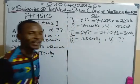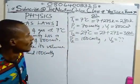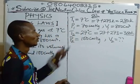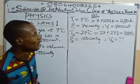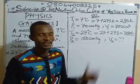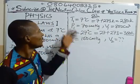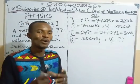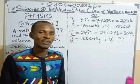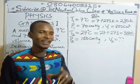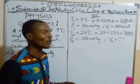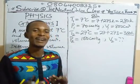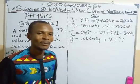We are looking for the final volume. Looking at these physical quantities, you can see that all three quantities vary, so there is no one kept constant. In this situation, we are going to use the general gas equation.